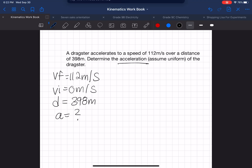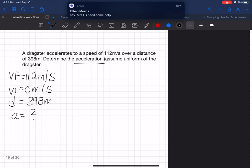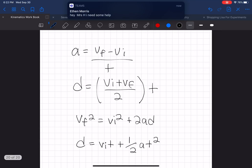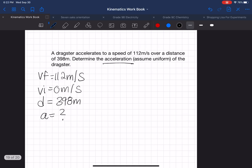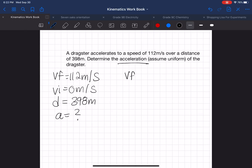Which formula can we use that can give us acceleration and that we have all these to put into that formula? If we look over here, we can use this formula right here: vf squared equals vi squared plus two times ad, and we're going to isolate for a.